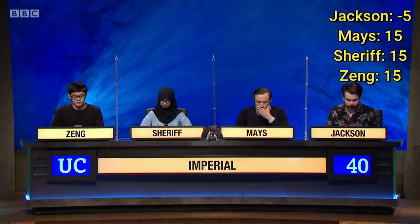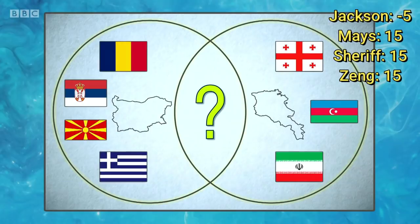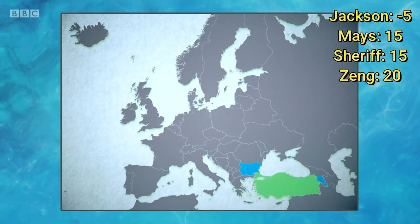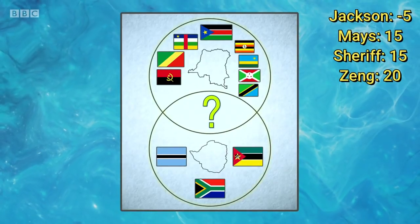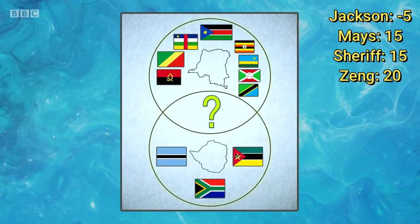With picture bonuses of three more Venn diagrams showing the land borders of a pair of countries, in each case give the single shared neighbour that lies in the intersection of the diagram. Firstly, Bulgaria and Armenia, so Turkey. Turkey is correct. Secondly, Congo and Zimbabwe, so this is going to be Zambia. Zambia. Zambia is correct.